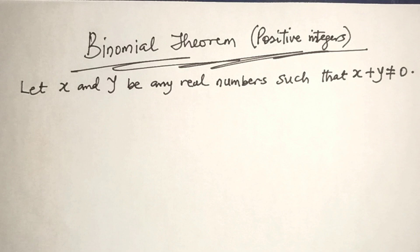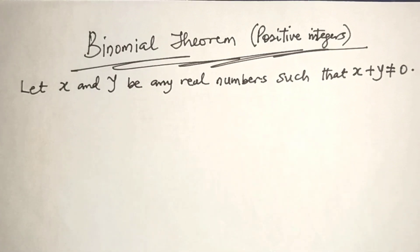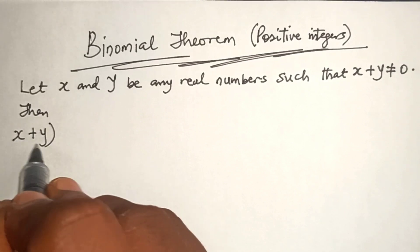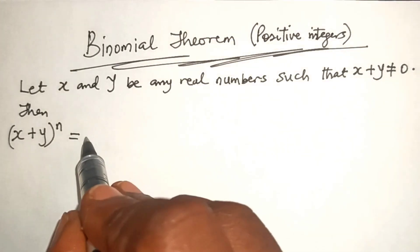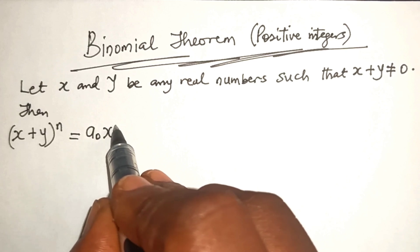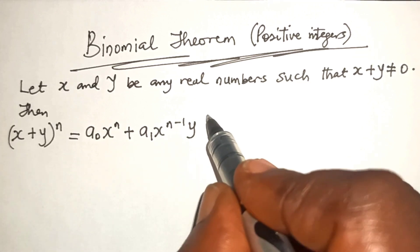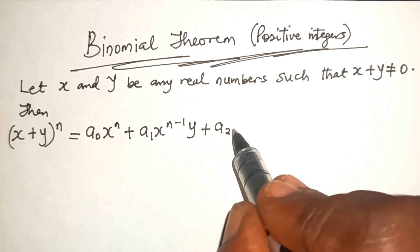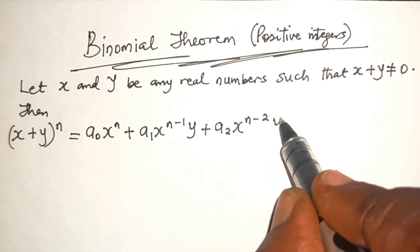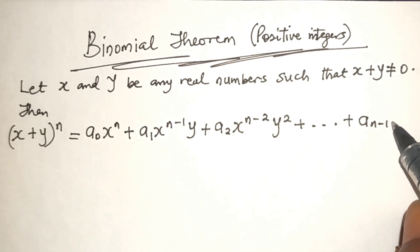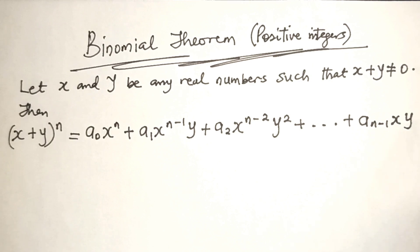This video is on the binomial theorem for positive integers. Let x and y be any real numbers such that x plus y is not equal to zero. Then the binomial x plus y raised to power n is equal to a-zero x to power n, plus a-one x to power n minus 1 times y, plus a-two x to power n minus 2 y squared, up to a-n-minus-1 x times y raised to power n minus 1.